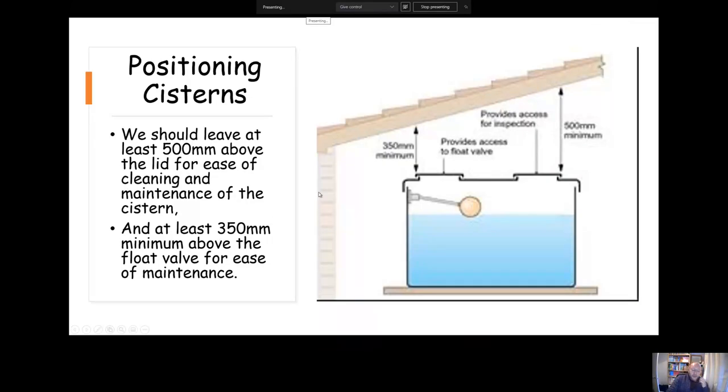When it comes to positioning systems, we need to position systems carefully. The key sizes with regards to the position: it should be no closer than 350 mil to the roof and that's so we can get into the float valve to maintain it if needs be. Then on the other side, it should be at least 500 mil clearance so we can get into the system itself to carry out cleaning.